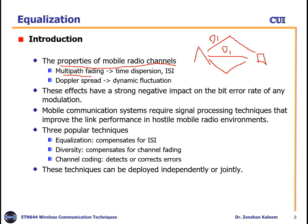So the same data D1 will reach the receiver from three different paths. The transmitter can be a base station and the receiver is your mobile phone. When transmitted data reaches the receiver from multiple paths, this is called a multipath channel. This results in fading — the received data quality degrades — and it arises due to time dispersion, meaning signals from different paths arrive at different time slots.